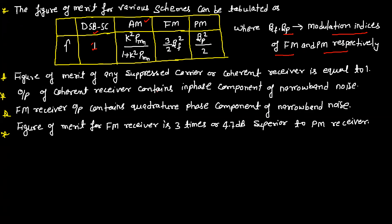The figure of merit of any suppressed carrier or coherent receiver is equal to 1. The output of a coherent receiver contains the in-phase component of narrowband noise. The FM receiver output contains the quadrature phase component of narrowband noise. The figure of merit for an FM receiver is 3 times, or 4.7 dB, superior to a PM receiver.